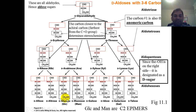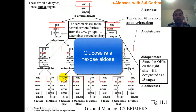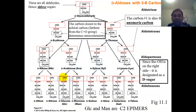Let's look at glucose, which we will study in metabolism later in the course. Glucose has six carbons: one, two, three, four, five, six. So glucose is not only a hexose — hexa meaning six — but it is also an aldose. Glucose is an example of an aldose hexose, an aldehyde sugar that is six-carbon.